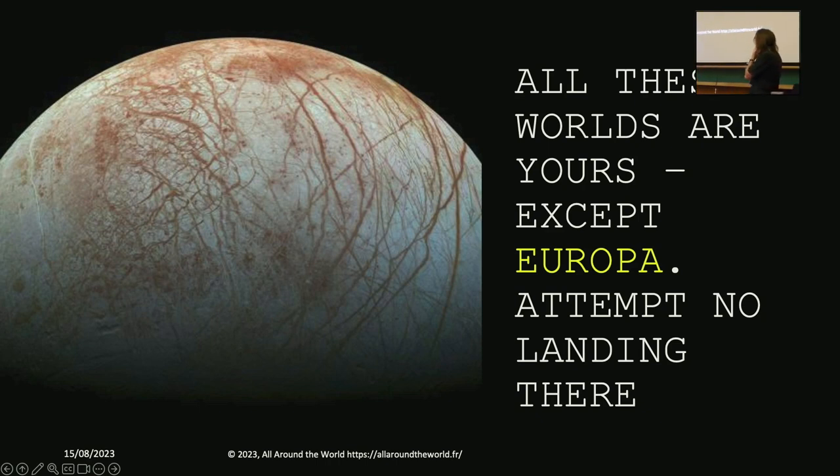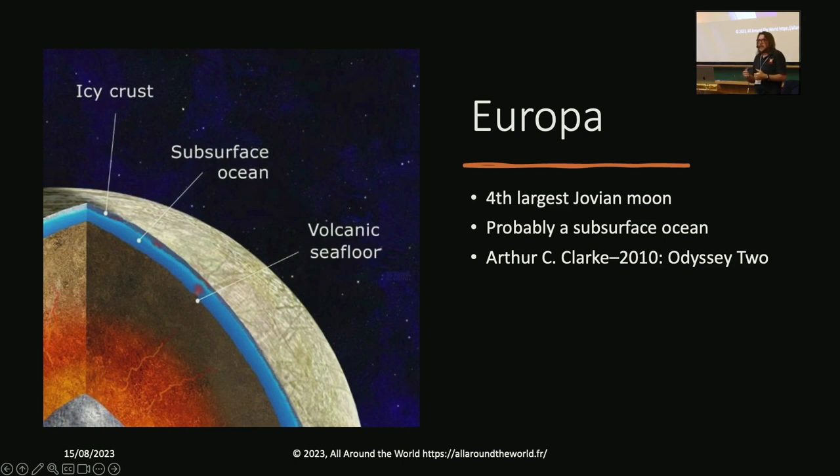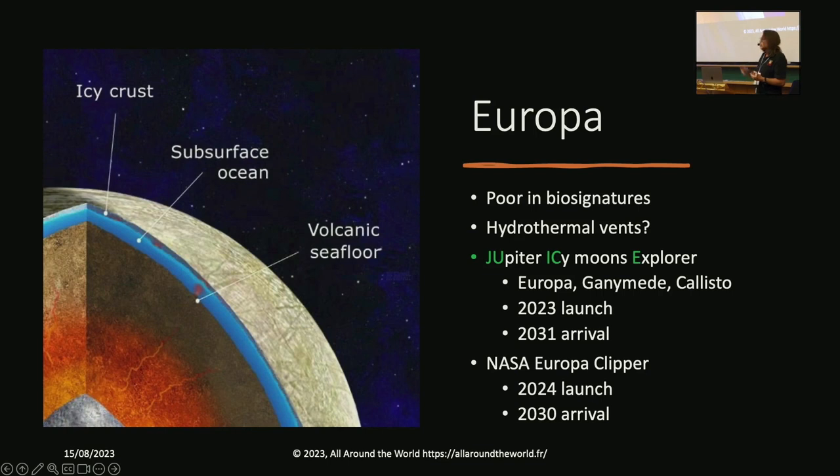Some of you might recognize this very famous quote. All these worlds are yours except Europa. Attempt no landing there. Why did I include this particular slide? This is from 2010: Odyssey 2 by Arthur C. Clarke. Europa is, we are exploring Europa for the possibility of life. But it's poor in biosignatures that we've detected. So we don't have any evidence that there's something we think might possibly be living there. But it does appear to have a subsurface ocean. And it could have hydrothermal vents under the ocean. And those are very interesting because they provide both energy and food for any potential life. So we could have extremophiles on Earth which could potentially survive on Europa right now.